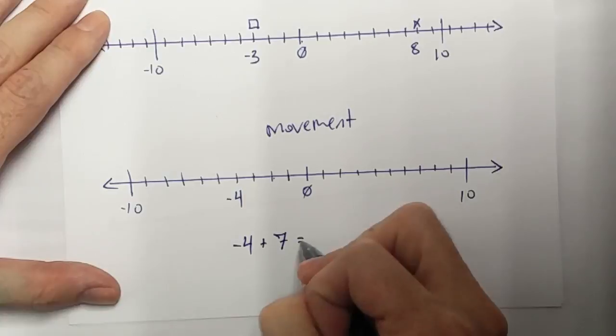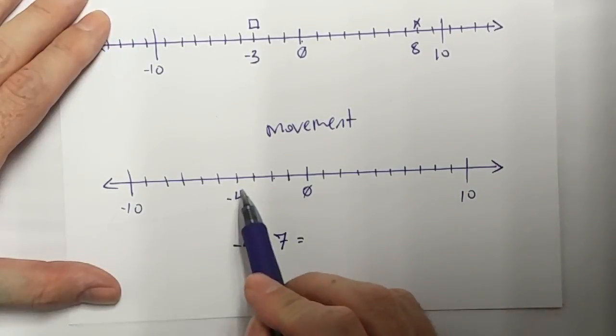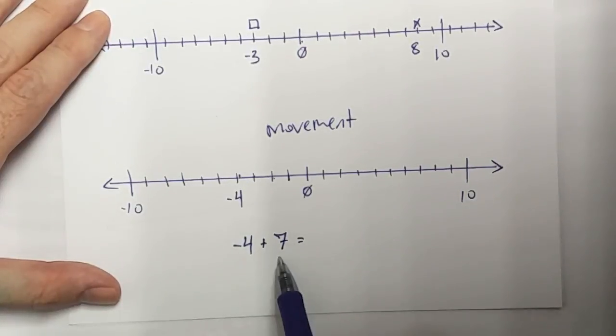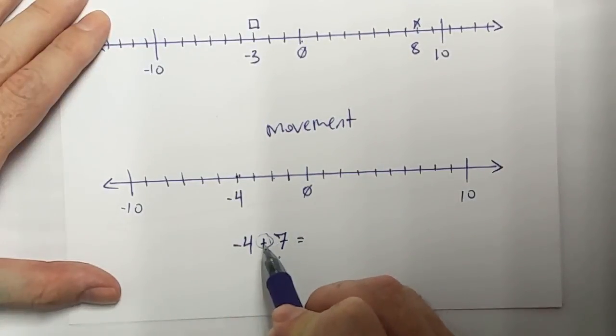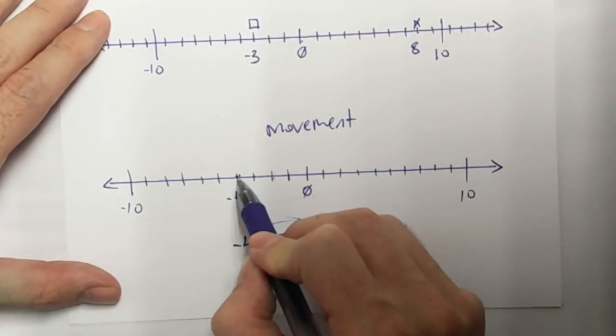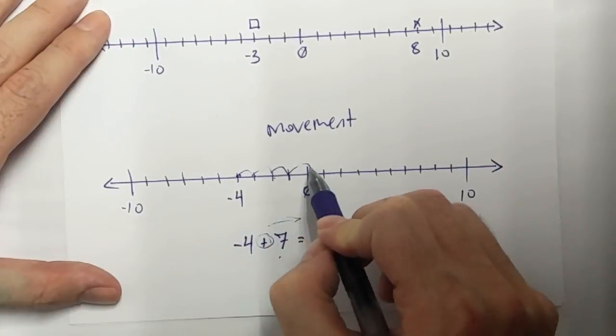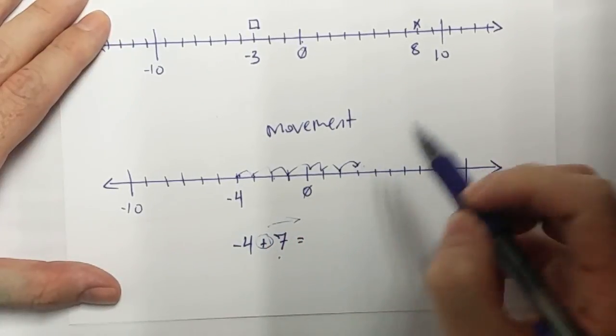Increase of 7. Well, where am I going to end up? If I take my negative 4 and I increase by 7. So negative 4, I go up or increase. This also means to the right. I'm going to go 1, 2, 3, 4, 5, 6, 7. And here I am.